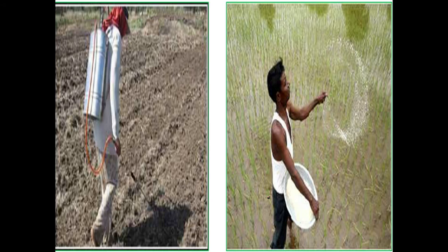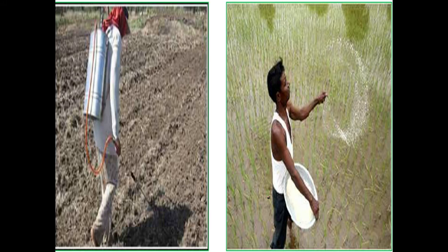You can see an image showing a person spreading fertilizer and manure in the field. Now let's talk about the fourth step, which is a very important step involved in the cultivation of crops. The fourth step is called irrigation. Irrigation means a regular supply of water to the crops at regular intervals of time.